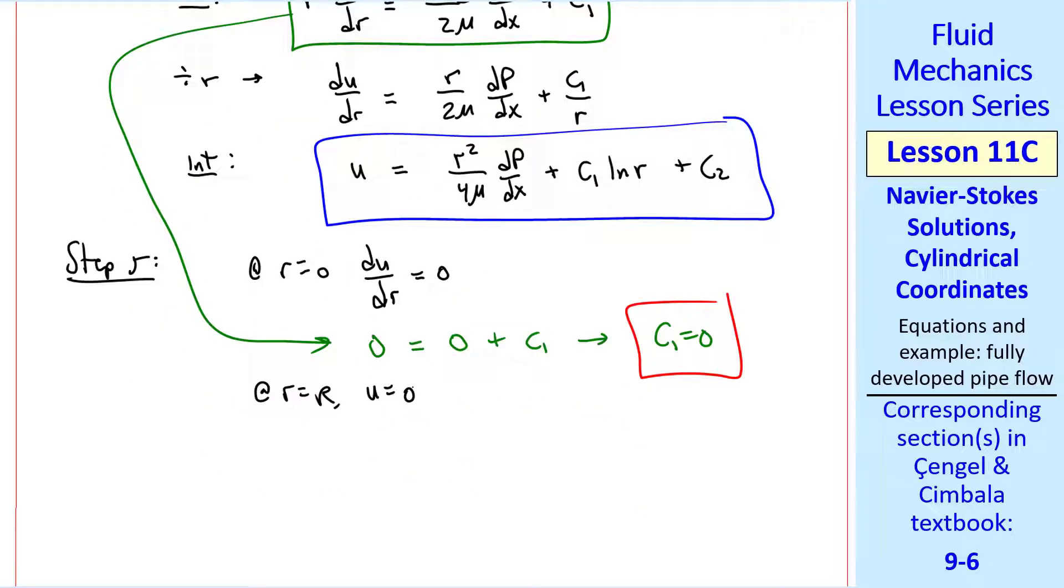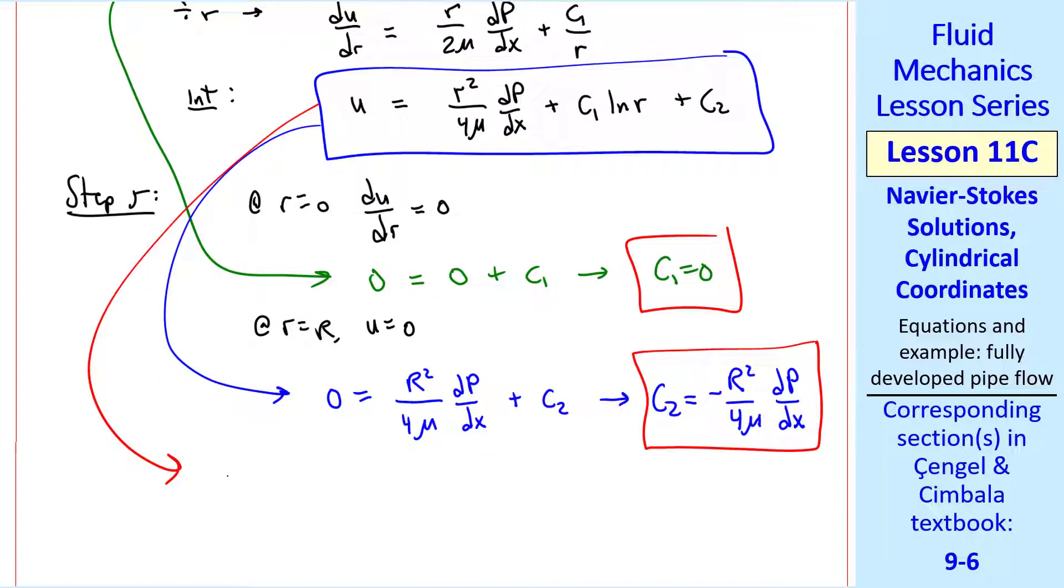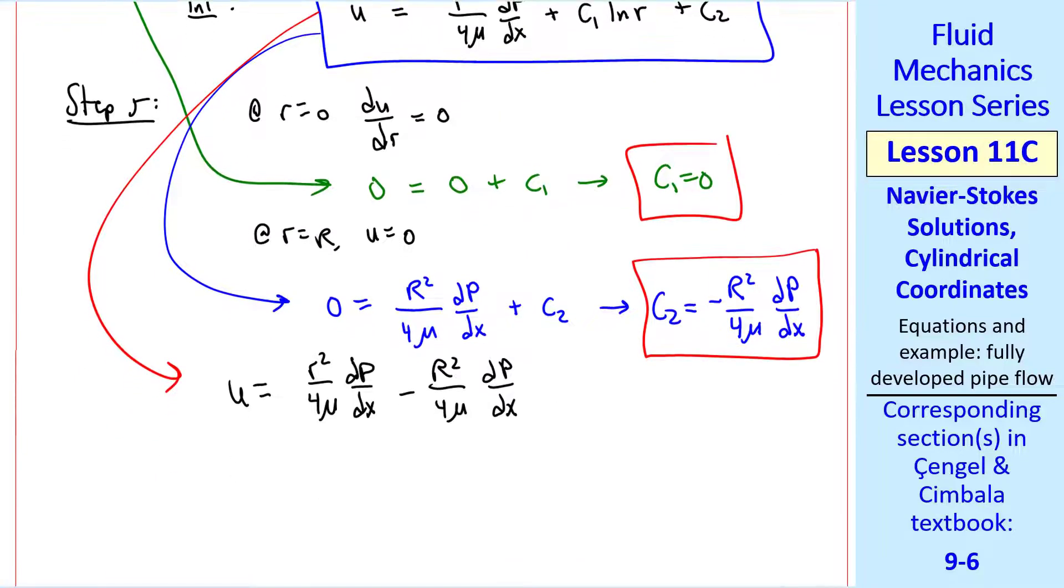Then we have the no-slip condition at r equal R. Let's apply that to this equation. 0 equals R² over 4μ dp/dx plus c2, since this term has gone away. Thus c2 is negative R² over 4μ dp/dx. And then u becomes this, and we can combine the two terms to get our final expression.